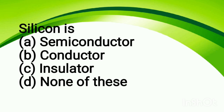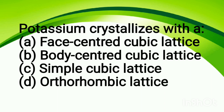Silicon: option A, semiconductor; option B, conductor; option C, insulator; option D, none of these. The correct answer is option A, semiconductor. Silicon shows some properties like metals and some like non-metals, so it behaves like a semiconductor — in some cases it can transfer heat and electricity, and in some cases it cannot.